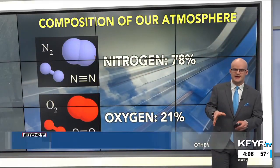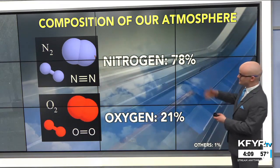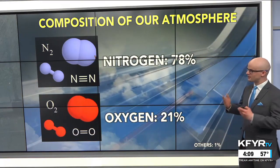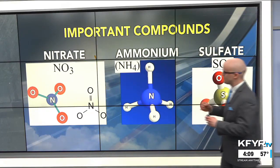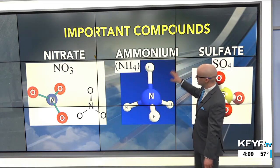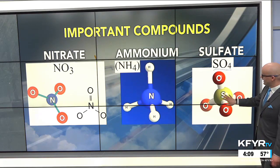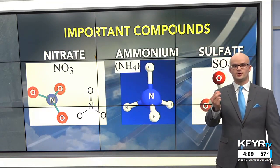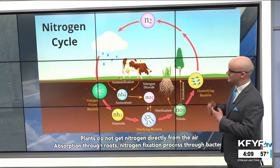Starting with the composition of our atmosphere, the invisible molecules all around us: nitrogen N2 is 78 percent and oxygen is 21 percent, the other 1 percent plays an important role here. We're going to focus on more complex compounds — nitrate, which has a nitrogen base with three oxygen atoms; ammonium, nitrogen with four hydrogen atoms; and sulfate, which has a sulfur atom with oxygen atoms attached.